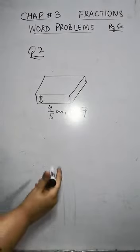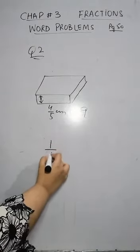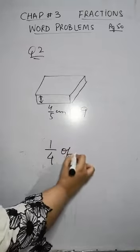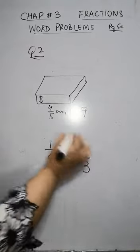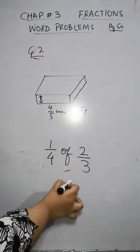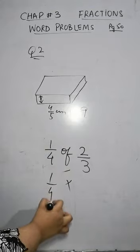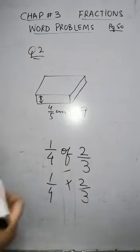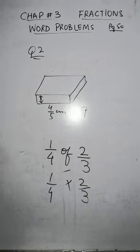Simply, you have to find that one-fourth of two-thirds is how much. We change it to multiply. One-fourth multiply by two-thirds. So you will find the answer.